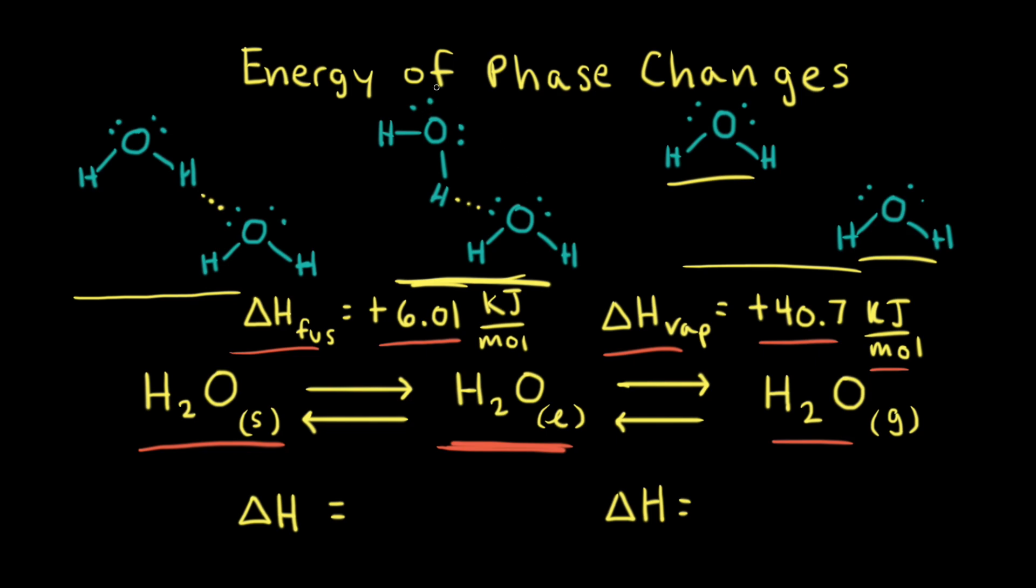And so it takes a lot of energy to pull these two water molecules apart. It takes a lot of energy to overcome these hydrogen bonds. And that's the reason why we have such a large value for the heat of vaporization. So it takes a lot more energy to completely pull these molecules apart than it did to simply increase the freedom of motion. So 40.7 is a much bigger number than 6.01.